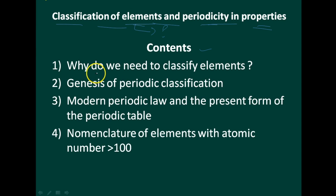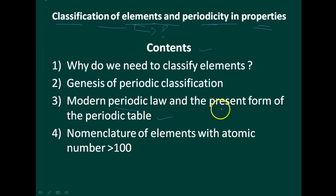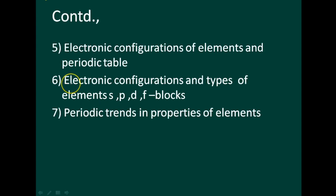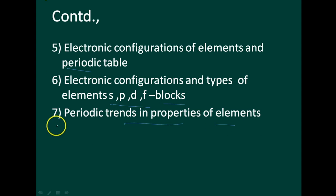These are the contents of what I am going to teach you in this unit. The first one is why do we need to classify the elements. Second is genesis of periodic classification. Third is modern periodic law and the present form of the periodic table. Then nomenclature of elements with atomic number greater than hundred, electronic configurations of elements and periodic table, SP and DF blocks, and finally periodic trends in properties of elements.